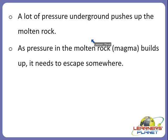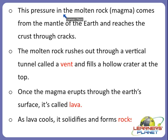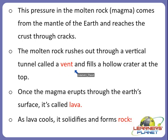After molten rock erupts through the surface of the earth, a lot of pressure underground pushes up the molten rock. As pressure in the magma builds up, it needs to escape somewhere. This magma comes from the mantle of the earth and reaches the crust through cracks. Finally, this molten rock rushes out through a vertical tunnel called a vent, coming from a magma chamber upwards, and then fills a hollow crater at the top.